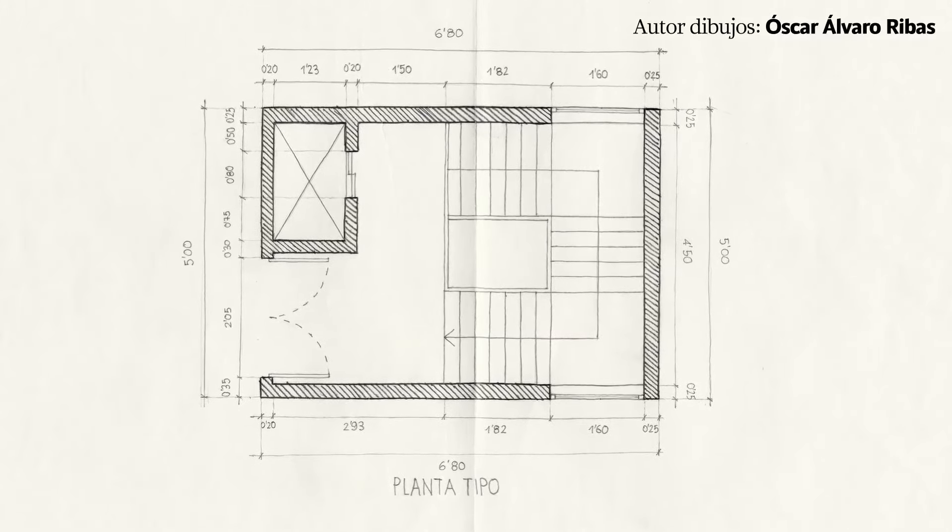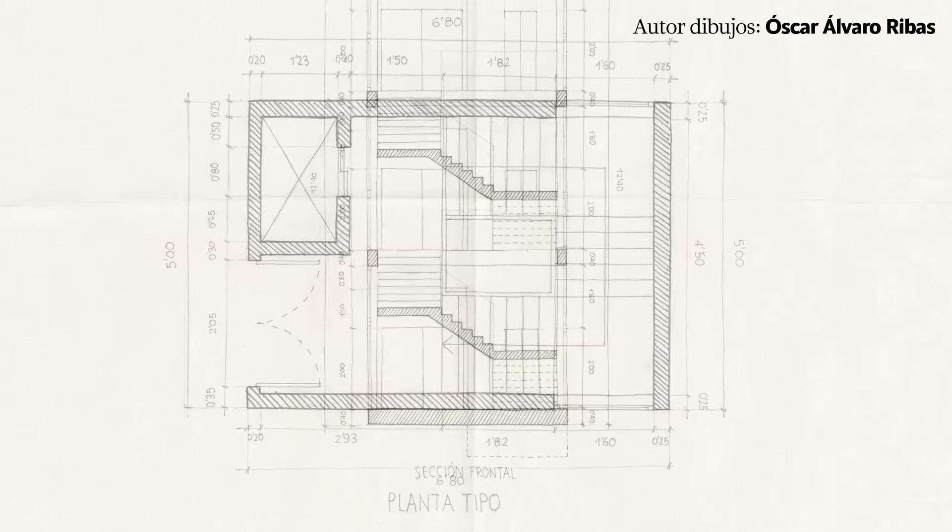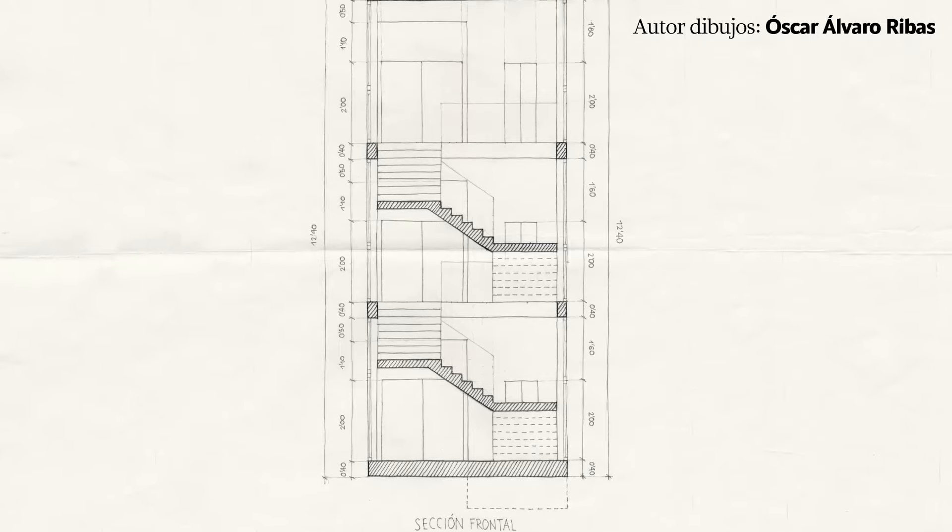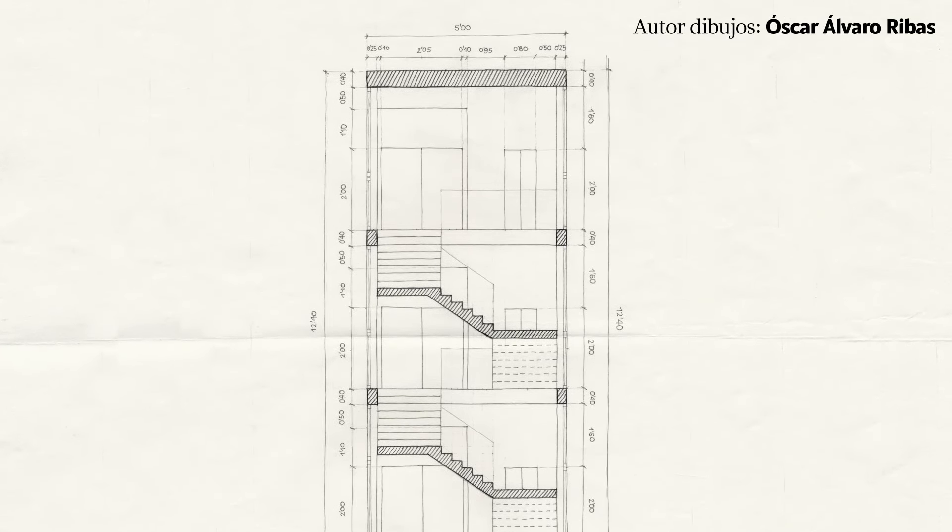Cuando dibujamos siguiendo la normativa del dibujo arquitectónico lo hacemos en planta y también lo hacemos en alzado. Una vista complementa a la otra. Cuando sobre estas vistas colocamos los símbolos que vamos a aprender en este tema lo hacemos de una forma diferente. Vamos a ver algunos casos.